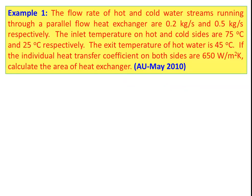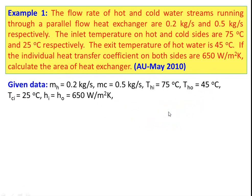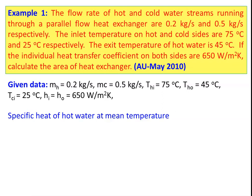We take Example 1. The flow rate of hot and cold water streams running through a parallel flow heat exchanger are 0.2 kg/s and 0.5 kg/s respectively. The inlet temperatures of the hot and cold sides are 75°C and 25°C. The exit temperature of the hot water is 45°C. The individual heat transfer coefficients on both sides are 650 W/m²K. Calculate the heat transfer area. Given data: mass of hot fluid = 0.2 kg/s, mass of cold fluid = 0.5 kg/s, hot fluid inlet = 75°C, hot fluid outlet = 45°C, cold fluid inlet = 25°C, Hi = Ho = 650 W/m²K.